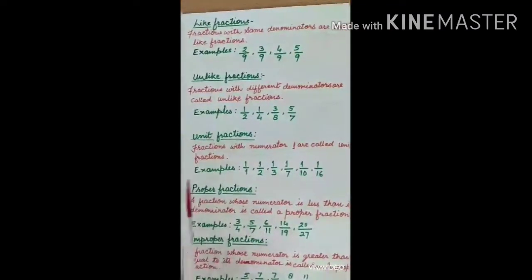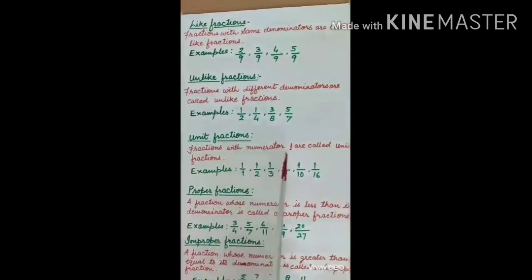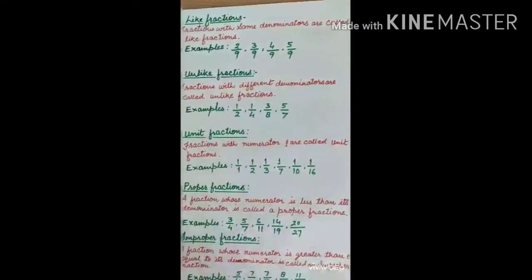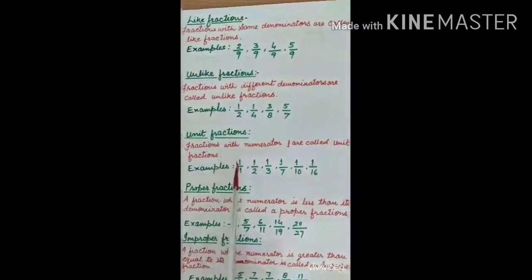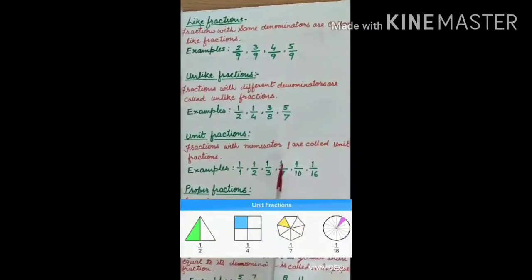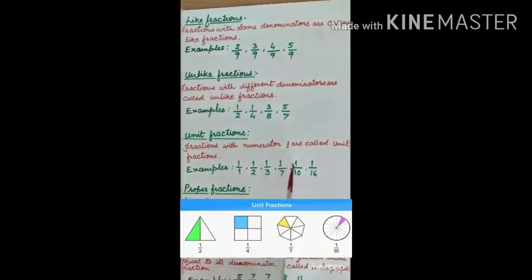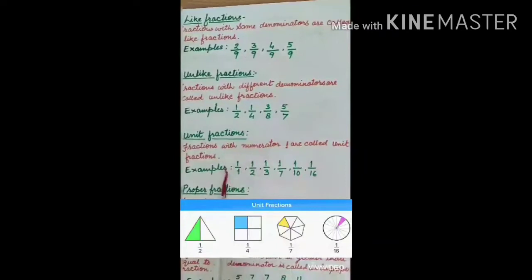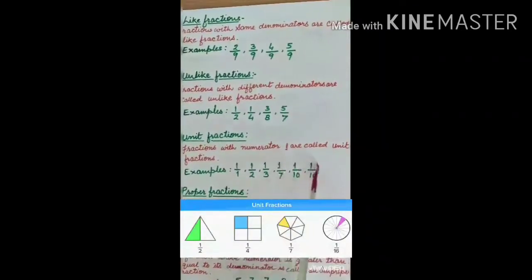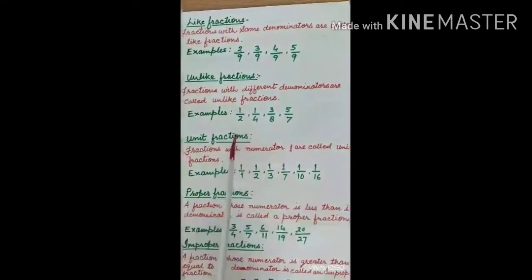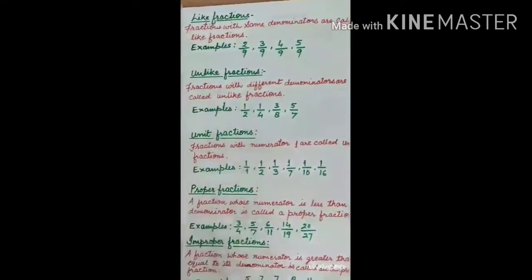Unit fractions: fractions with numerator 1 are called unit fractions. For example, 1 by 1, 1 by 2, 1 by 3, 1 by 7, 1 by 10, and 1 by 16. In all these examples, the numerator is 1, so these are unit fractions.